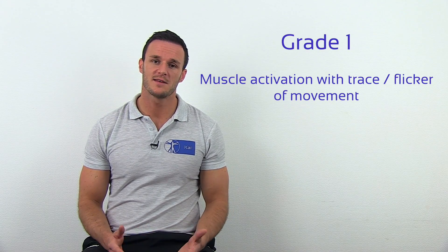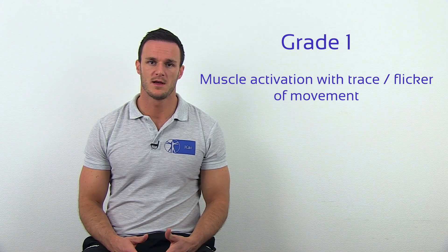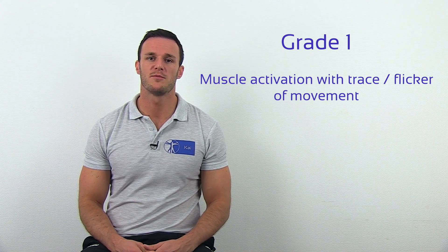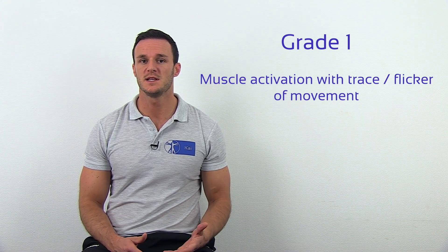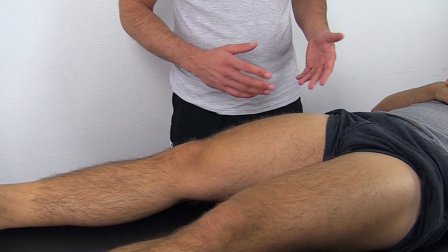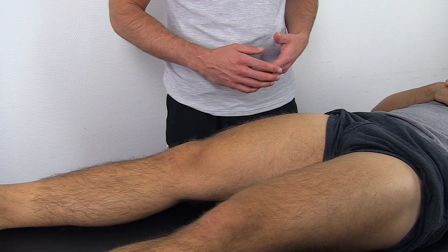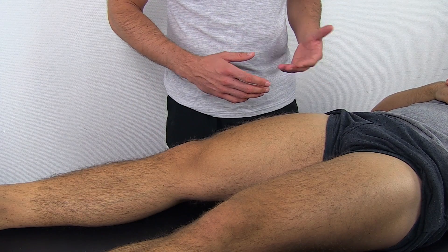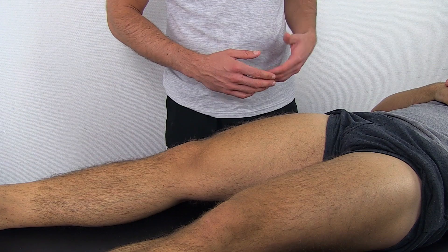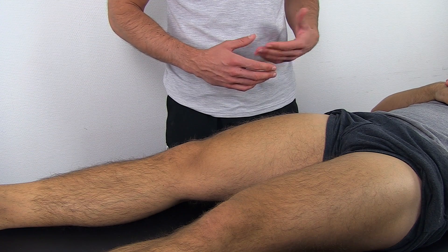Grade 1: the patient can activate the muscle without moving the limb, so only a trace or flicker of movement is seen or felt during palpation of the muscle. For grade 1, ask the patient to do the exact same thing, and this time you will see or feel a muscle flicker or trace of movement.